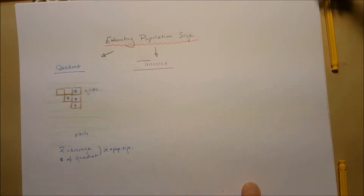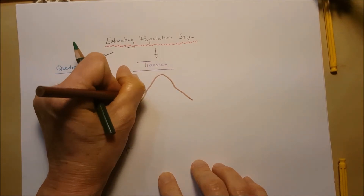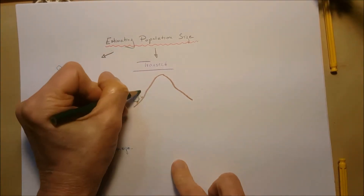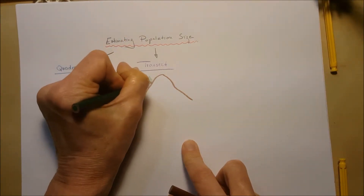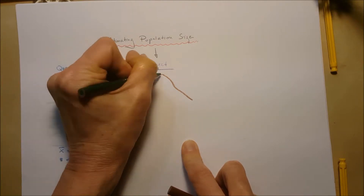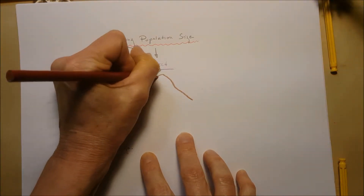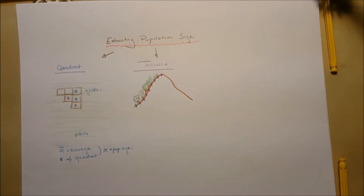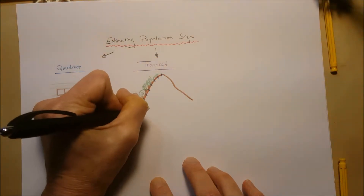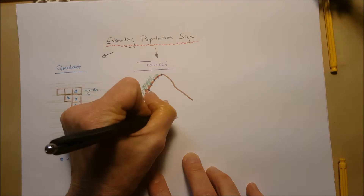The other method is the transect method. The transect method goes along a line — for example, on a mountain, showing how the population of different plant species changes with elevation. There might be pine trees and grassy areas at the top. The transect goes along a line and we count the number of organisms along it at certain lengths.